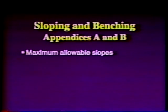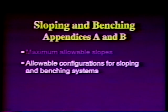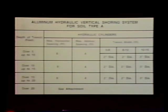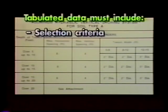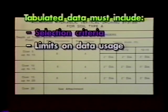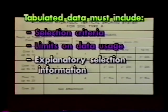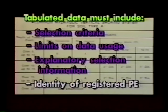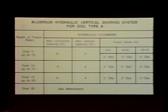The second option involves the use of Appendices A and B: maximum allowable slopes and allowable configurations for sloping and benching systems are set forth in those appendices. The third option involves the use of tabulated data, such as tables and charts. The tabulated data must be in written form and include selection criteria, limits on data usage to include the magnitude and configuration of slopes determined to be safe with explanatory information, and the identity of the registered PE who approved the data. At least one copy of this data must be kept at the job site during construction of the protective system.